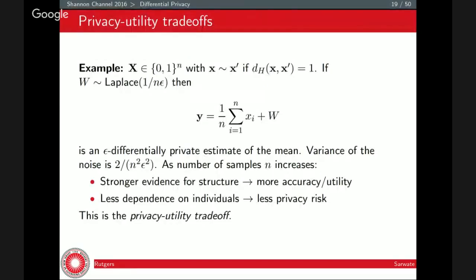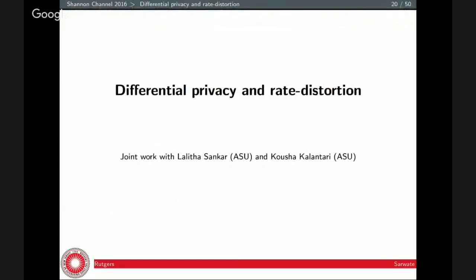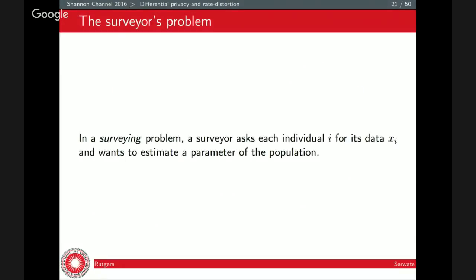This motivates the privacy-utility trade-off. I can specify an epsilon and evaluate what my expected error is going to be. This is joint work with Lalitha Shankar and her student Kusha Kalantari, who's also working with Oliver Kosut, and this is stuff we're going to present at ISIT. Before I was saying we care about the parameter of the distribution — essentially the average number of ones — and we add noise to the ML estimate. But it turns out I could push the privacy guarantee down to the level of individual data points.